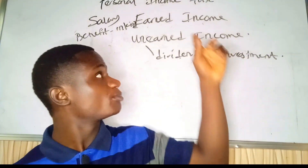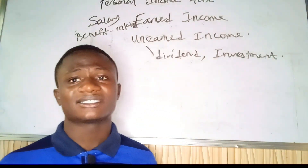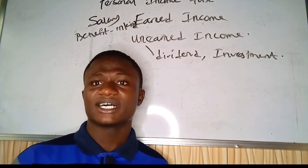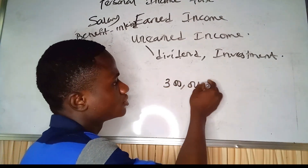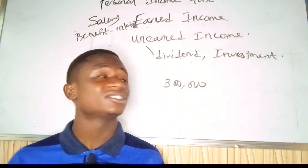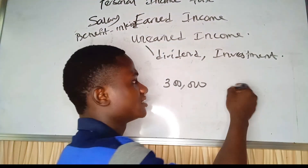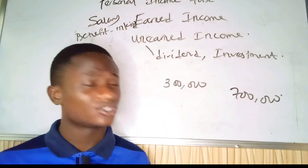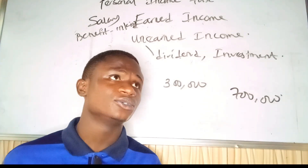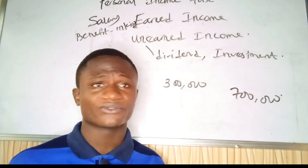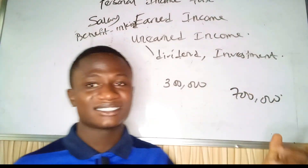How do we treat benefits in kind in taxation? If your employment agreement provides bodyguards costing 300,000 Naira yearly, that 300,000 will be added to your taxable income. If your taxable income is 700,000, and you enjoy a benefit worth 300,000 from your company, that benefit is added to the 700,000, and tax is then applied on it. So benefits in kind are also taxable.